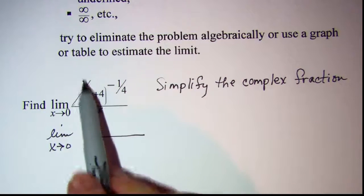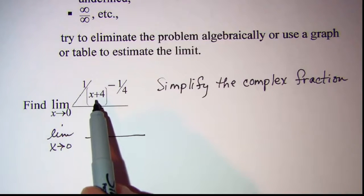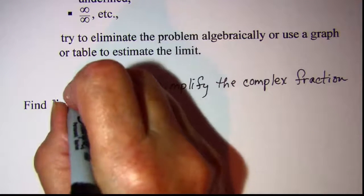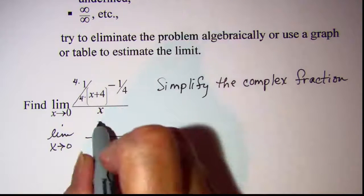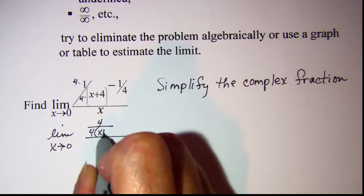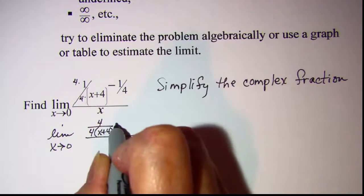For the first one, I need a 4 factor, so I'll multiply top and bottom by 4, and so now I have 4 over 4 times the quantity (x + 4). Subtract...